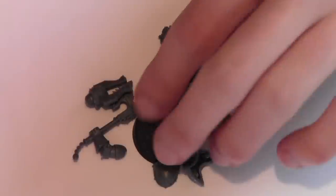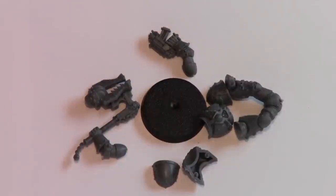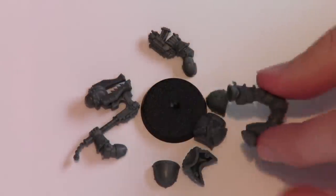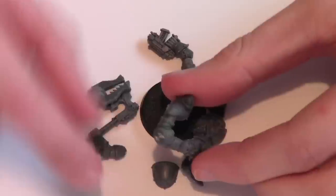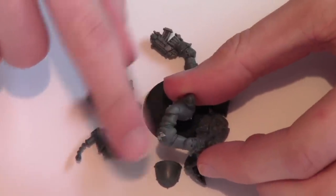Alright, so I've removed all these pieces from the sprue, selected a base here for it. So now we need to do a bit of cleaning up. Where we've removed them all from the sprue, we've got all these kind of sprue markings.